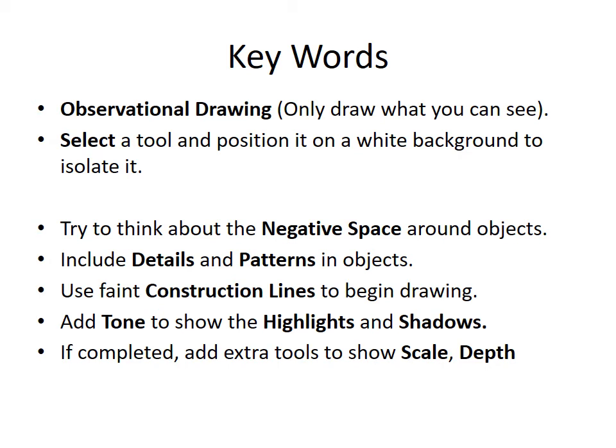Begin by using faint construction lines — it's really important to draw around the outline of something with a very thin pencil to give you that basic line. If you make a mistake, it's something you can rub out slightly. Try to add some tone. Tone is the difference between light and dark, so we're looking at the highlights — the very brightest parts of an object — and then the shadows. As Jim Dine does, the shadows are right around the edges and these really emphasise the object and bring it off the paper.